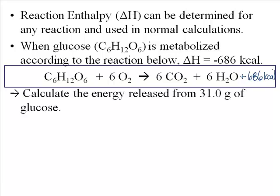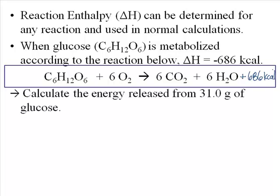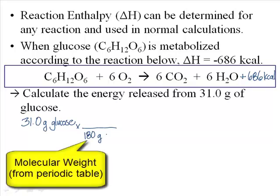Now that I know this, I can answer some pretty basic questions. Let's say you eat something like a Snickers bar, which might have about 31 grams of glucose in it. Let's calculate the amount of energy released when your body metabolizes 31 grams of glucose. We're going to handle this the same way we've handled all calculations involving balanced chemical reactions — using stoichiometric calculations. I start with 31.0 grams of glucose, and in order to relate that to the information in the balanced equation, I have to change to moles. Glucose, C6H12O6, has a molecular weight of 180 grams per mole.